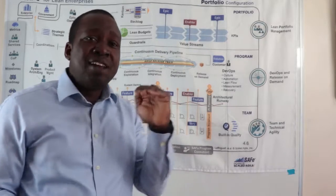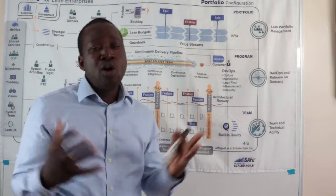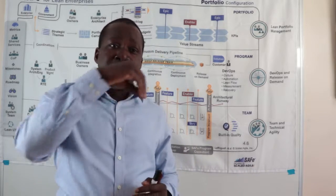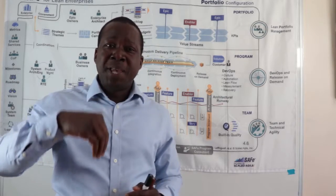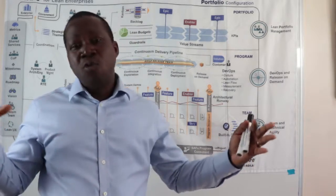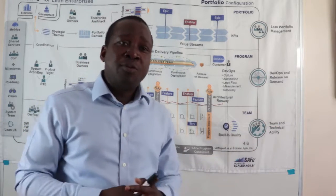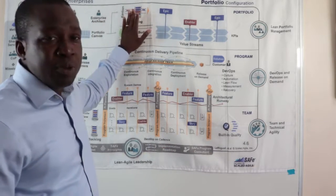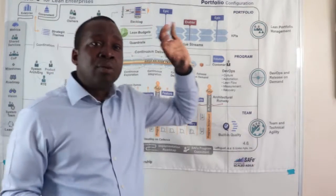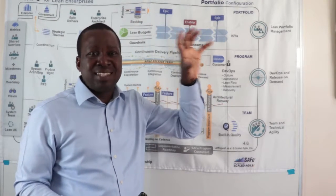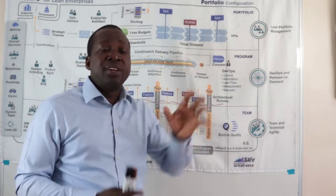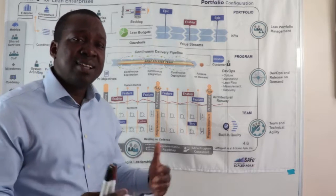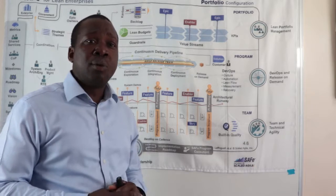Our value streams deliver value to the customer, and we need to take an overall look at our organization and draw out our key value streams and see how the business, systems, people and processes help deliver overall value to the customer. If we have a good understanding of our portfolio, we are able to create our portfolio Kanban — key projects, key product deliveries or initiatives that should be delivered over a particular period. We are able to assign a budget and then create a lean business case to sign off our initiatives.